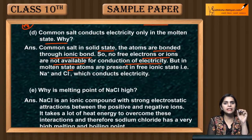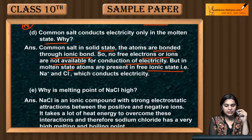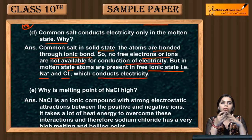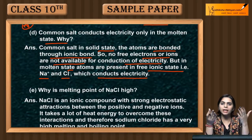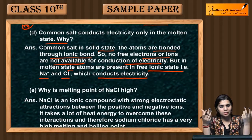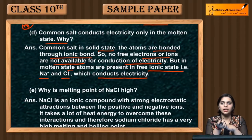But in the molten state, when you dissolve or melt it, the atoms are present in a free ionic state — i.e., Na⁺ and Cl⁻ — and these free ions carry positive or negative charges. When they move, they conduct electricity. So when NaCl is in the molten state, it conducts electricity.